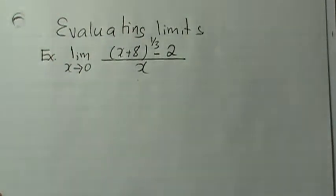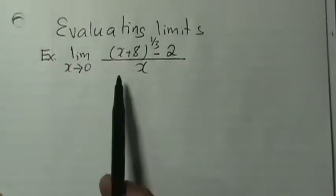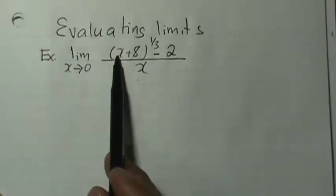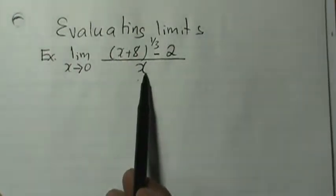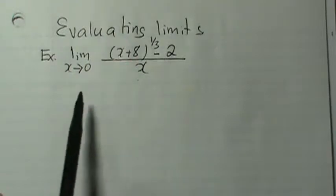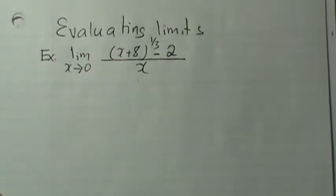The first thing we do to evaluate is use direct substitution. If I were to substitute x equals zero here and here, I will end up having zero over zero. So to avoid zero in the bottom, we need to simplify.